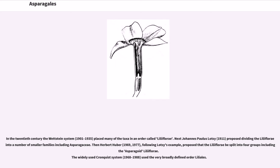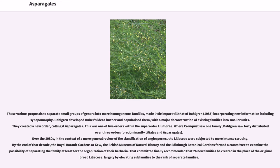Herbert Huber (1969–1977), following Lotsy's example, proposed that the Liliiflorae be split into four groups, including the asparagoid Liliiflorae. The widely used Cronquist system (1968–1988) used the very broadly defined order Liliales. These various proposals to separate small groups of genera into more homogeneous families made little impact until that of Dahlgren (1985), incorporating new information including synapomorphies. Dahlgren developed Huber's ideas further and popularized them, creating a new order called Asparagales — one of five orders within the superorder Liliiflorae. Where Cronquist saw one family, Dahlgren saw 40 distributed over three orders, predominantly Liliales and Asparagales.